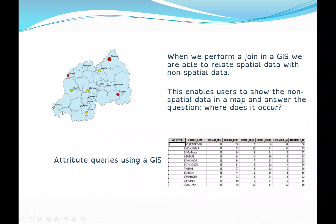Whenever we perform a join in GIS, we are able to relate spatial data with non-spatial data. This enables users to show the non-spatial data on a map and also answer questions such as, where does it occur? For example, we have our dataset — this is the attribute dataset — and it is related and shown on our map with the dots. So there is a relationship here between both spatial and non-spatial data.